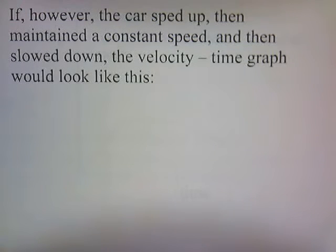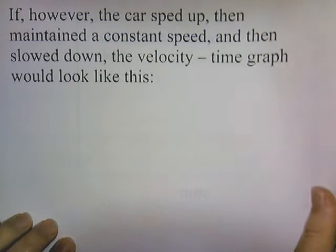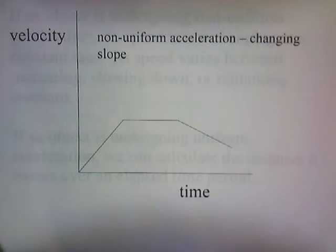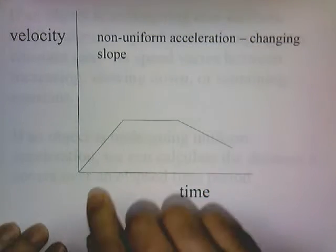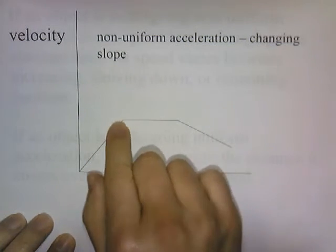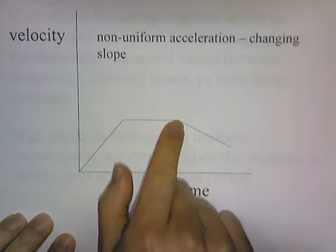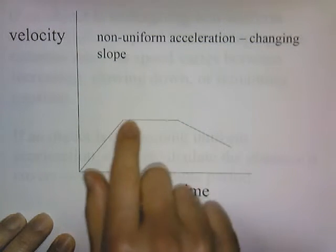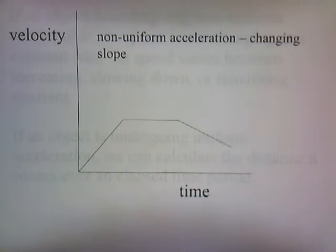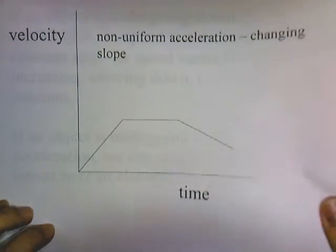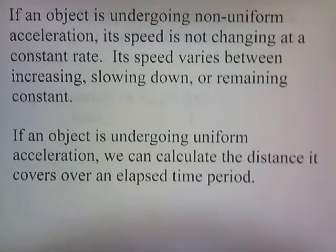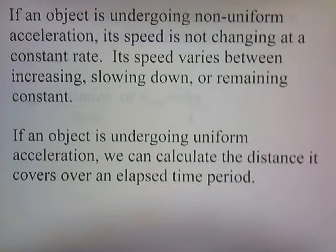If, however, the car sped up, then maintained a constant speed, and then slowed down, the velocity-time graph would look different. Here the car is speeding up, then suddenly moving at a constant speed, and then slowing down. So the slope is changing, and any time the slope changes, that means you have non-uniform acceleration. If an object is undergoing non-uniform acceleration, its speed is not changing at a constant rate — it varies between increasing, slowing down, and remaining constant.